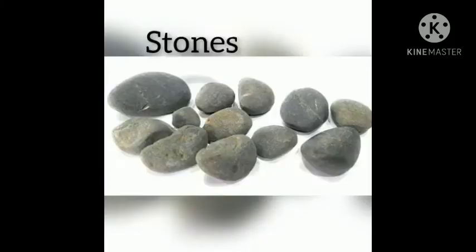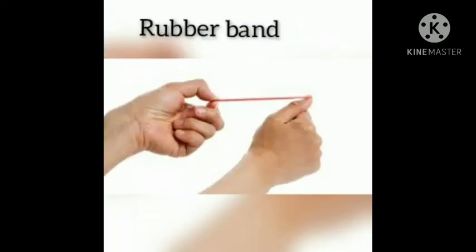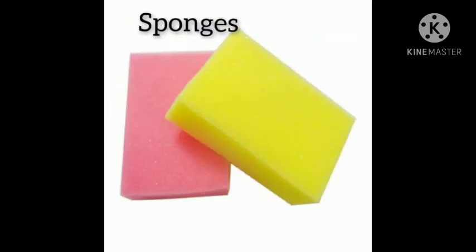Examples of solid state: Stones have a definite shape and definite volume and are hard in nature. Rubber band — a rubber band changes shape under force and regains the same shape when the force is removed; if excessive force is applied, it breaks. Sponge — a sponge has minute holes in which air is trapped; when we press it, the air is expelled out and we are able to compress it.